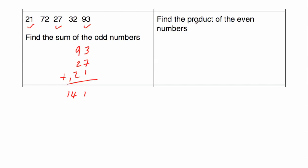The next question says, find the product. So that's what you get when you multiply the even numbers. So here we've got our two even numbers, 72 and 32. So we're going to need to multiply them together. So we're going to do 72 multiplied by 32. Write them in a column. 2 times 2 is 4, and 2 times 7 is equal to 14.